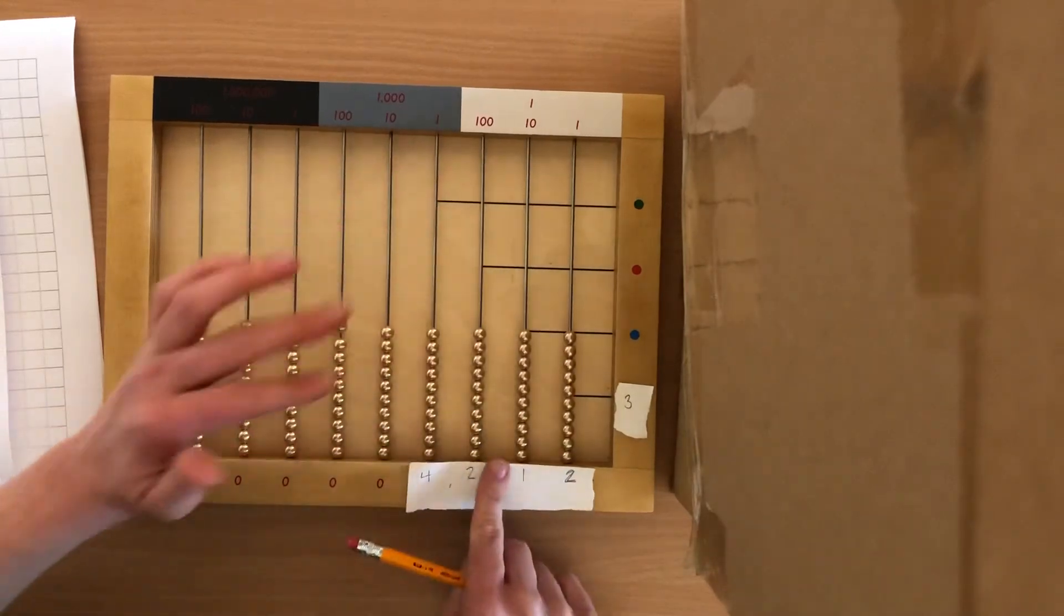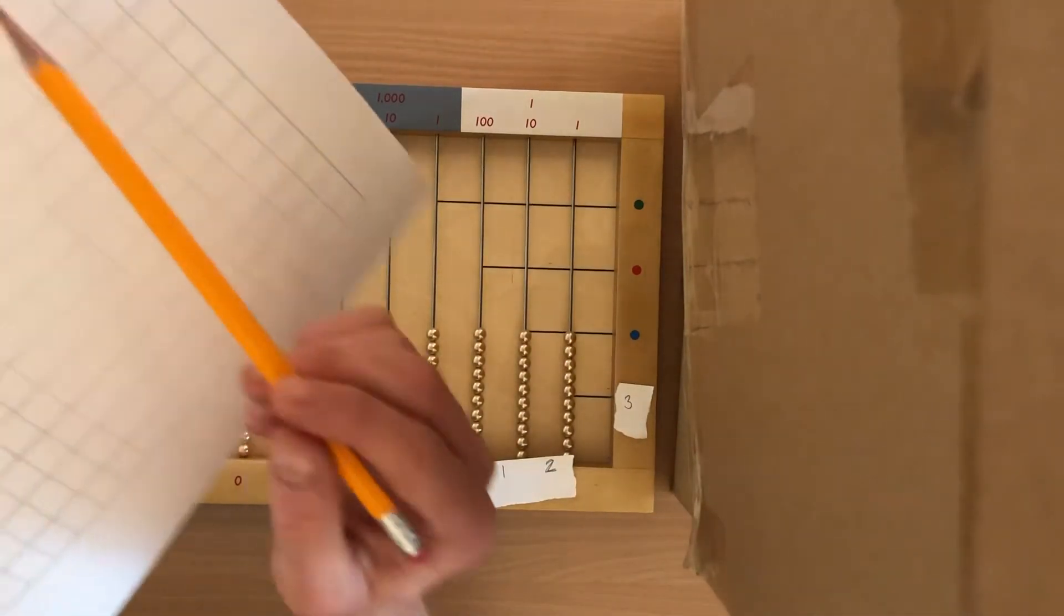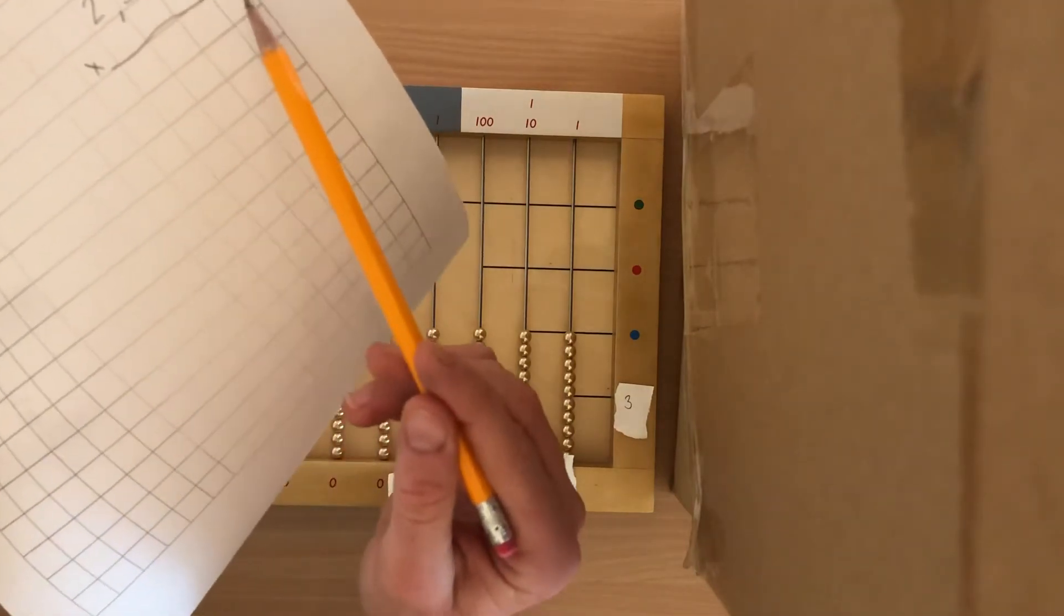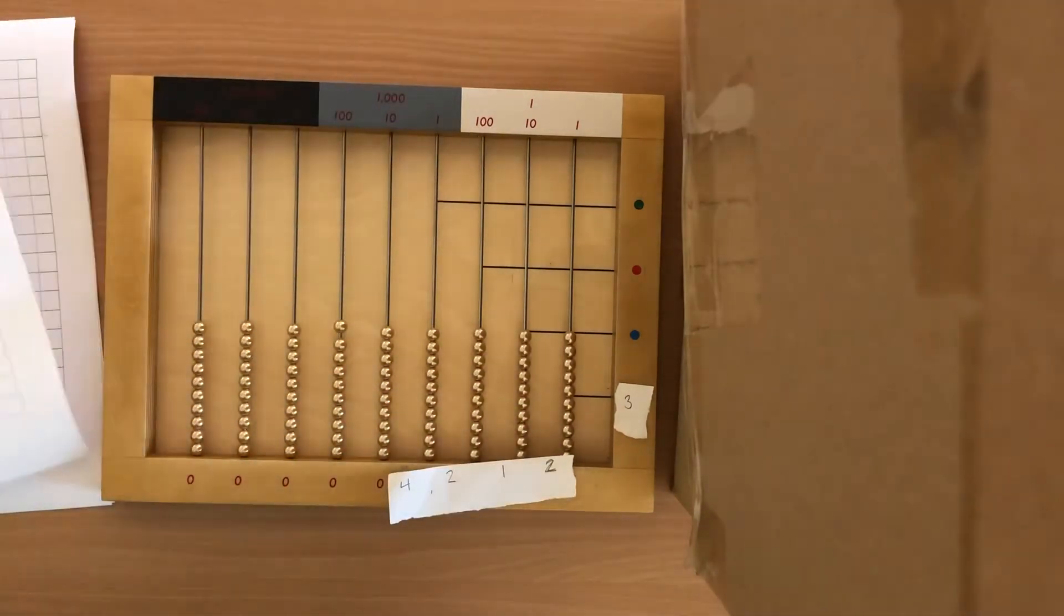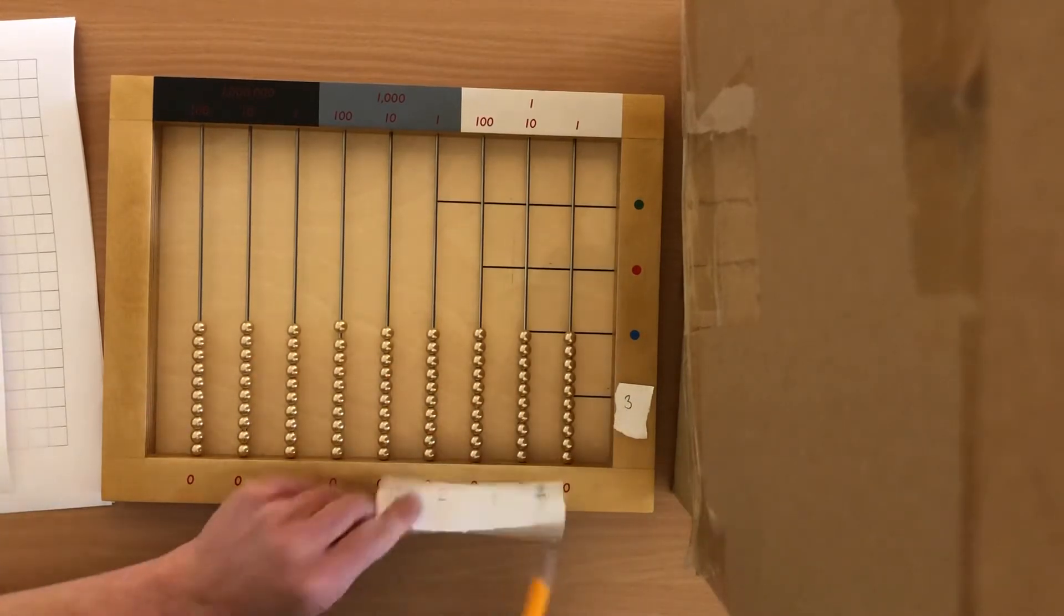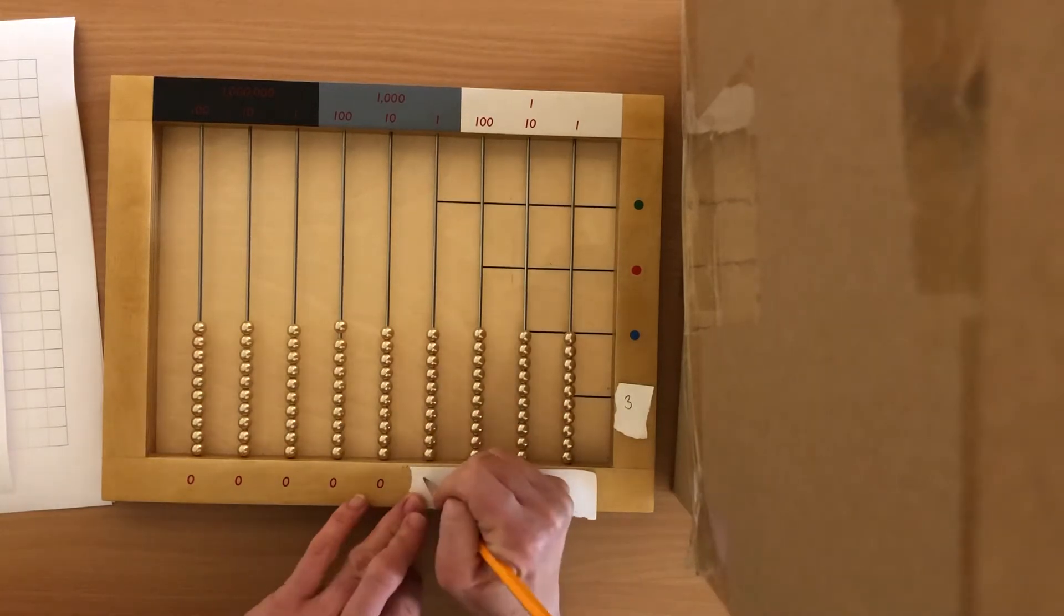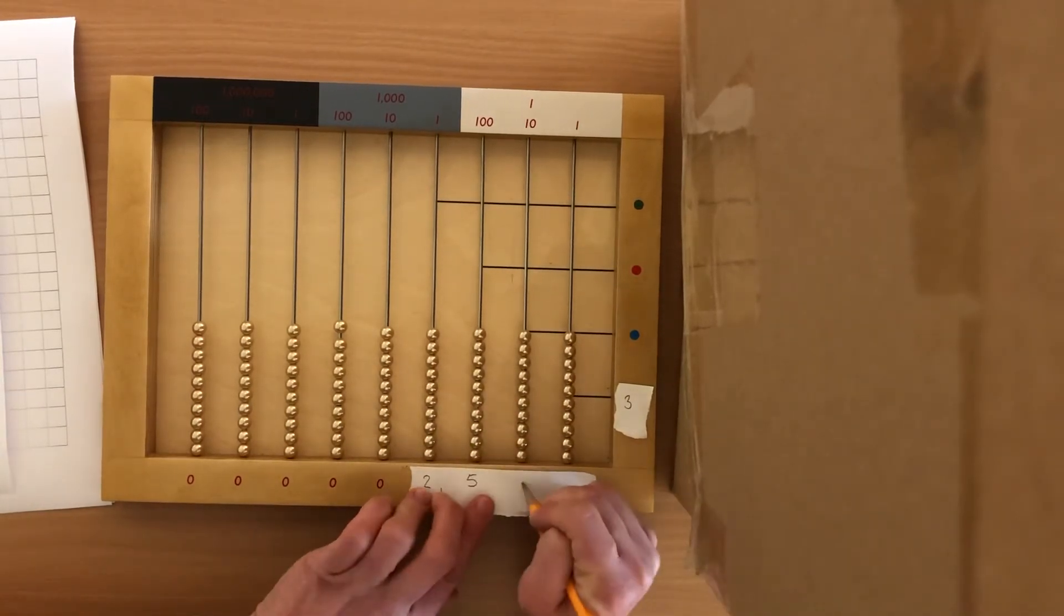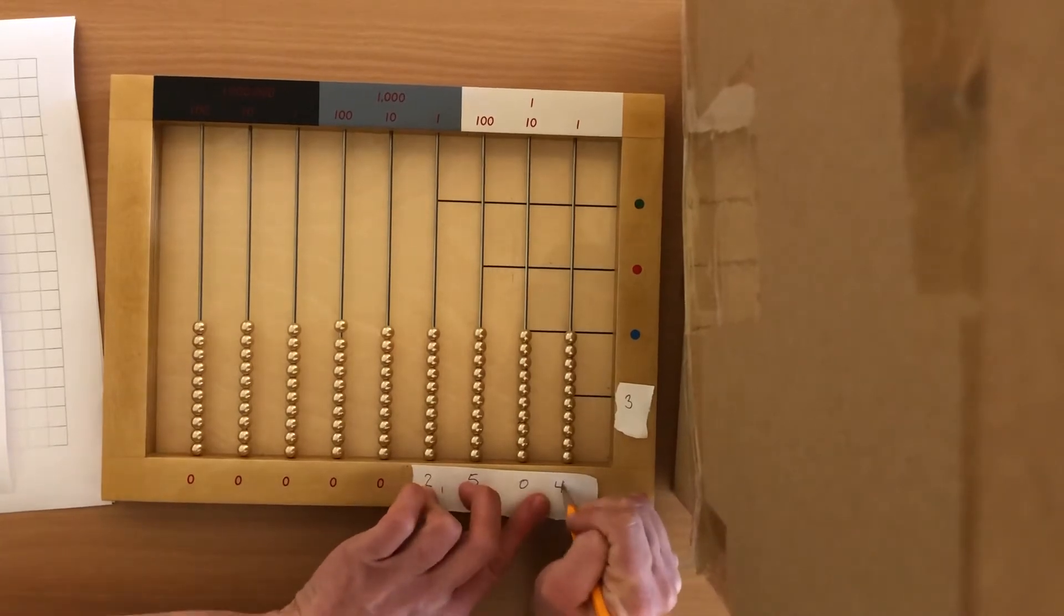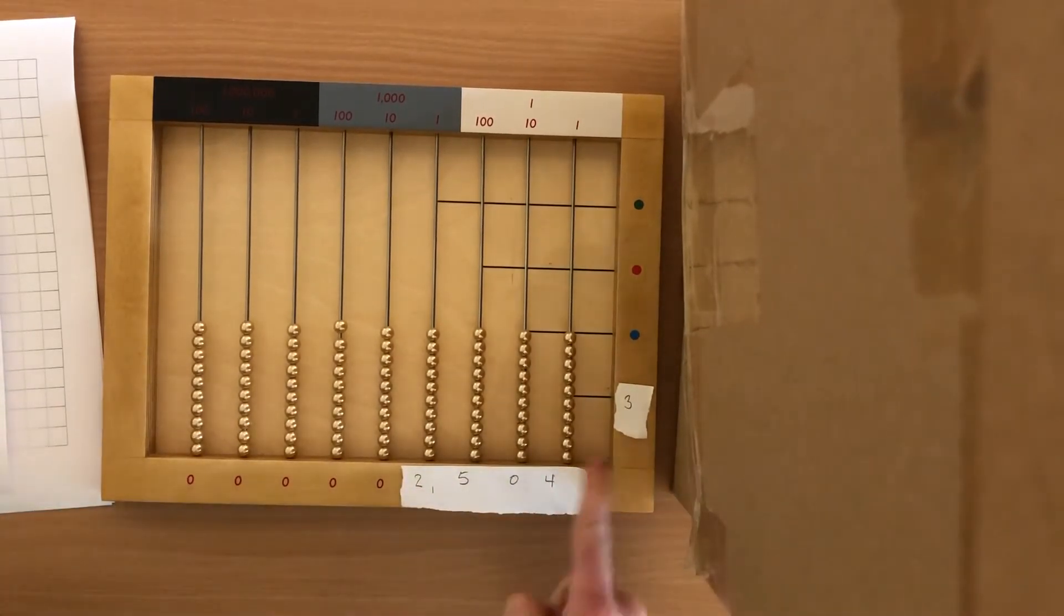Okay. One thing I like to do is reuse my slips of paper. So our next one is 2,504 times 3. So I have times 3 here already. I'm just gonna flip this over. I'm gonna do 2,504 times 3.